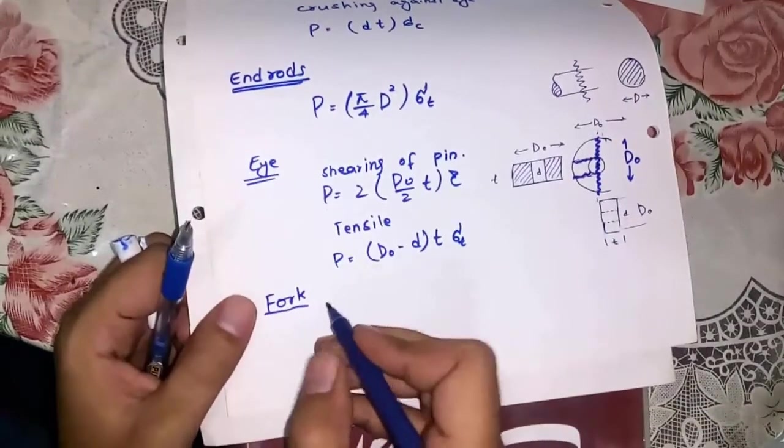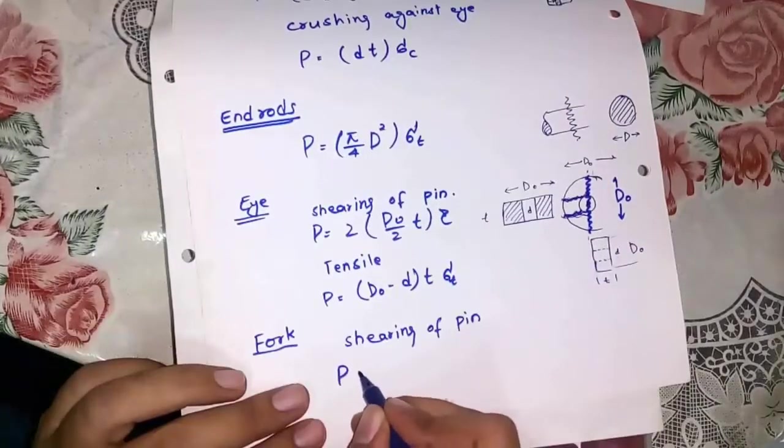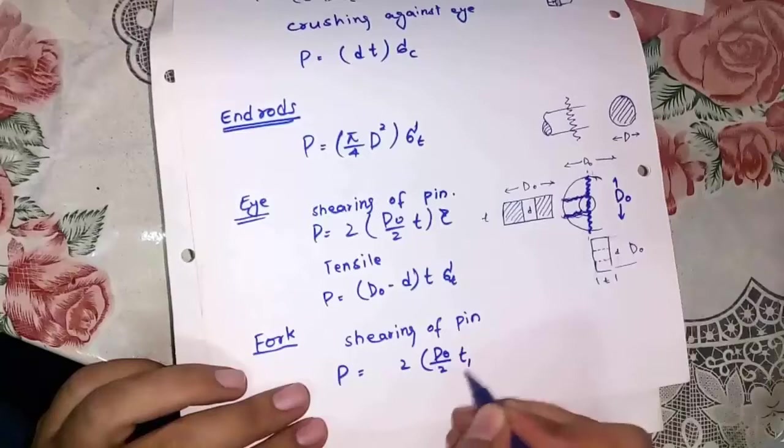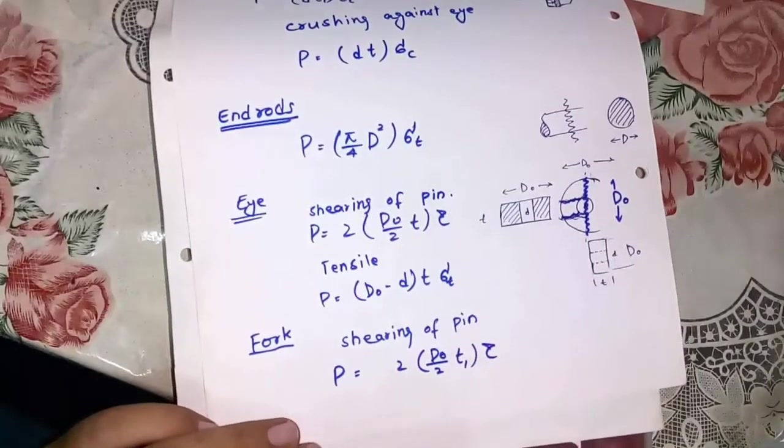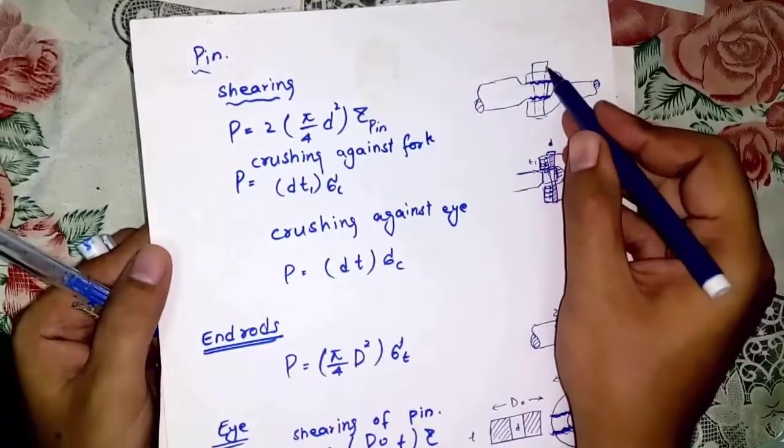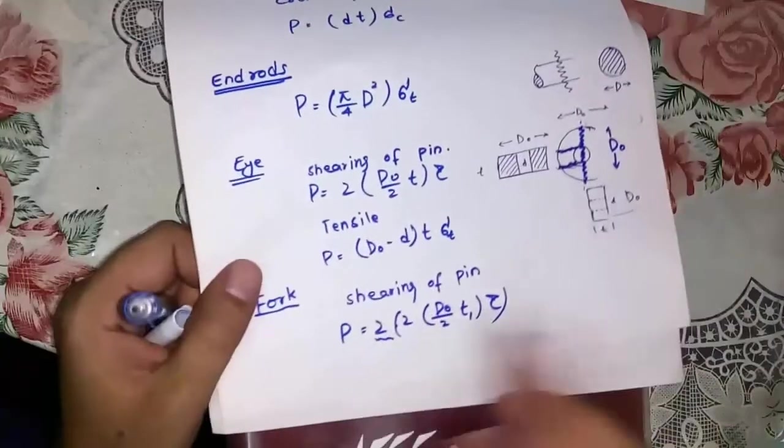First failure of fork is shearing. It is same like the shearing of pin in the eye's failure, but in this formula you would put the thickness of fork, which is d1. 2 is for the safety purposes. As we know, the fork has two legs. In the case of failure, both will be affected, so to compensate it, we will put another 2.